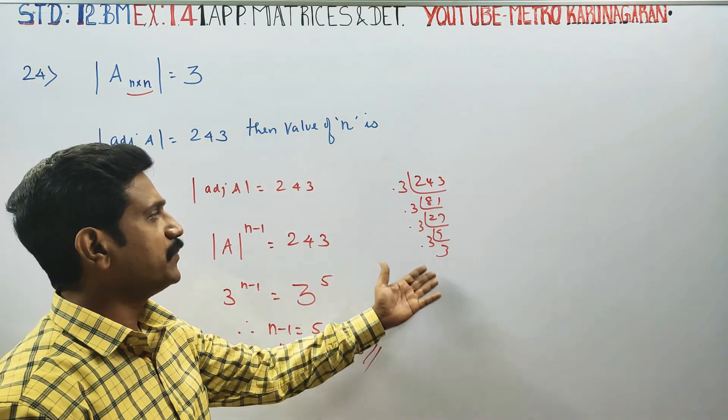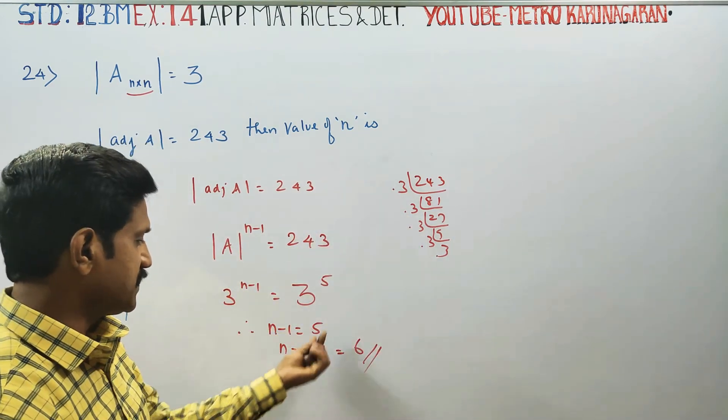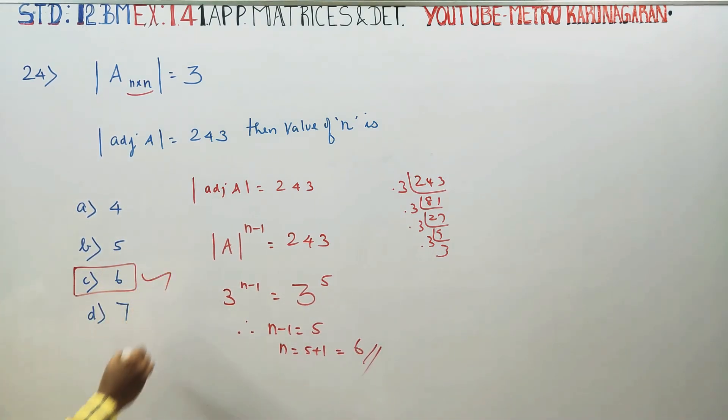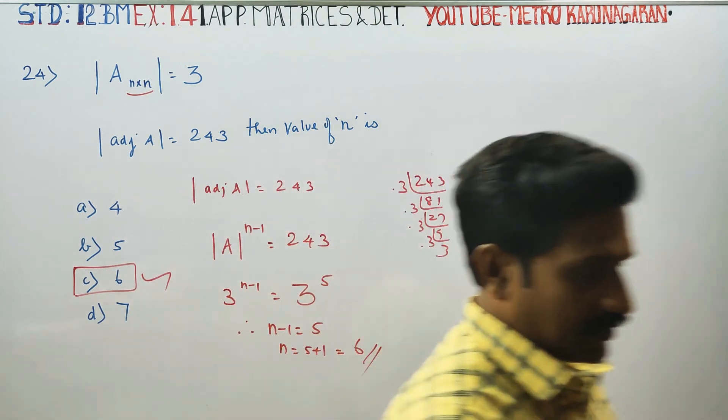If you break 243, you solve problem number 24 and get answer 6. Therefore, C is your correct answer for sum number 24. Thank you.